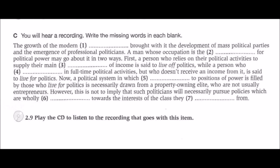Recording C. The growth of the modern state brought with it the development of mass political parties and the emergence of professional politicians. A man whose occupation is the struggle for political power may go about it in two ways. First, a person who relies on their political activities to supply their main source of income is said to live off politics. While a person who engages in full-time political activities but who doesn't receive an income from it is said to live for politics. A political system in which recruitment to positions of power is filled by those who live for politics is necessarily drawn from a property-owning elite who are not usually entrepreneurs. However, this is not to imply that such politicians will necessarily pursue policies which are wholly biased towards the interests of the class they originate from.